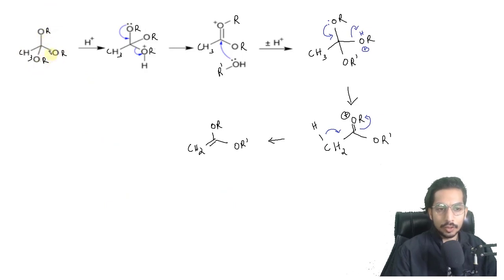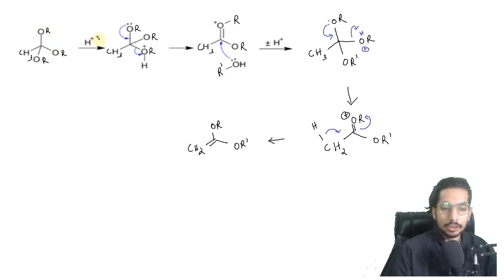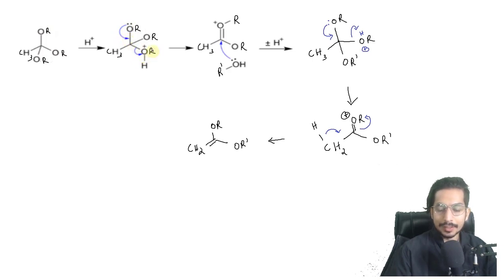We have three alkoxy groups attached and one methyl group. In the original question the R group was ethyl, but here I've used a general R group. When you add acid, one of the alkoxy groups gets protonated, and the lone pair from one of the oxygens migrates, eliminating the alkoxy group as an alcohol — so ROH is eliminated.